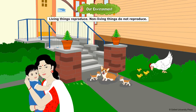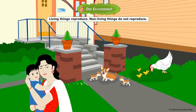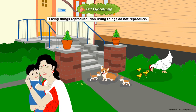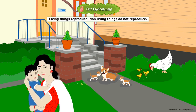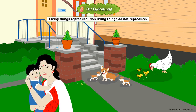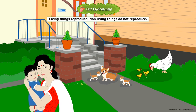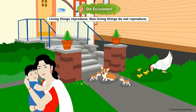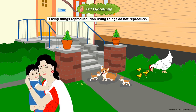Living things reproduce. That is, they produce new living things similar to themselves. Look at the mother carrying her baby. The hen is feeding on the grains along with her chicks. And the puppies are playing with the dog.